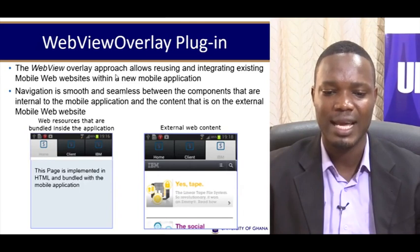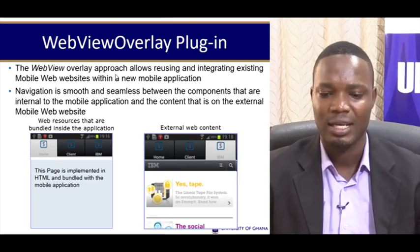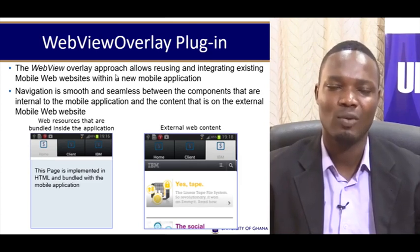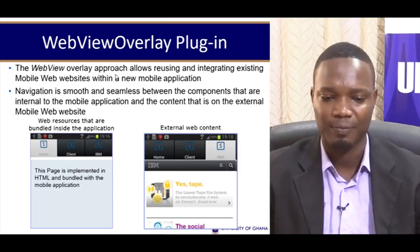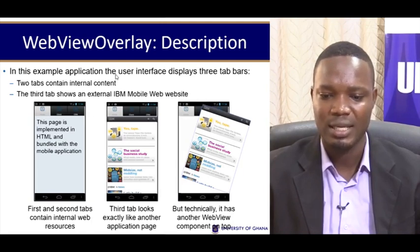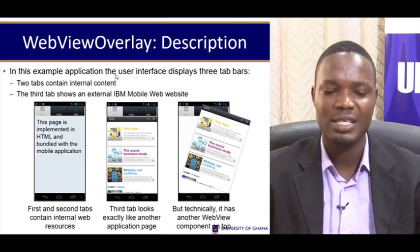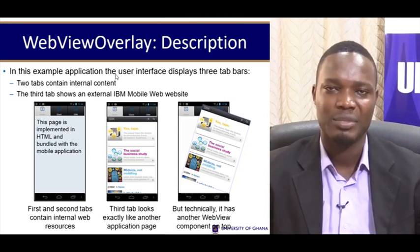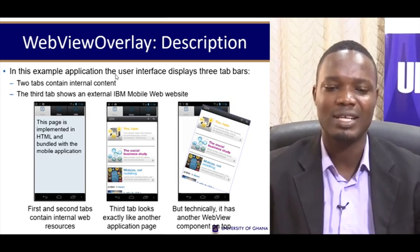What we are seeing on the slide is an application which makes use of the WebView overlay. It has different tabs: some tabs make use of the WebView overlay while others are strictly native. In this particular example, the user interface displays three tabs — two of these tabs contain internal contents for the mobile application, and the third tab shows an external source.